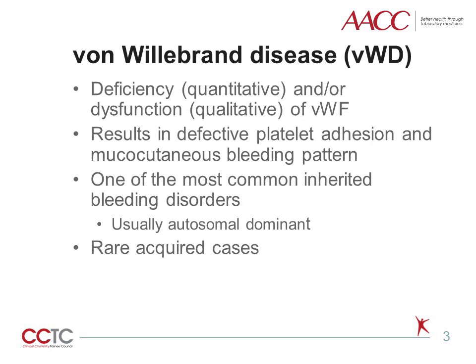Von Willebrand disease is one of the most common inherited bleeding disorders and is usually transmitted in an autosomal dominant fashion, although there are also autosomal recessive forms. Von Willebrand disease can be acquired with certain underlying medical conditions. The discussion today will focus on inherited forms of von Willebrand disease.